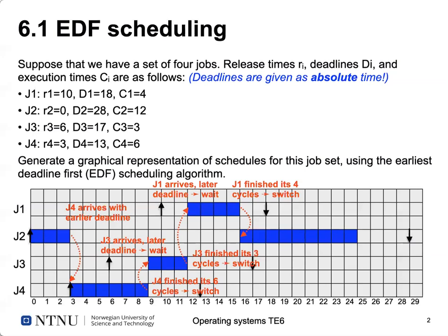The first question was about Earliest Deadline First scheduling. As always for scheduling algorithms, it's really important to figure out first if all tasks can be scheduled — meaning all tasks can actually find some time to execute on the CPU and finish before their deadline. For a hard real-time system, like an ABS controller in your car, reacting too late means bad things are going to happen.